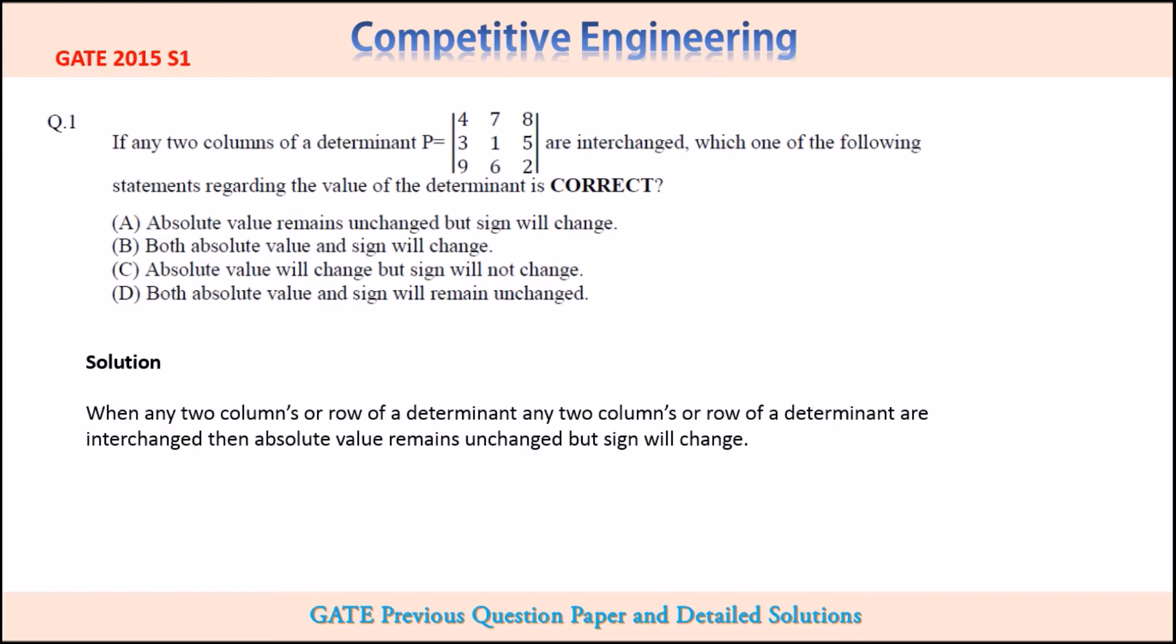The properties of determinant: one of the properties is when any two columns or row of a determinant are interchanged, then absolute value of the determinant remains unchanged but sign will change. Which means that if you are interchanging two rows or two columns, then the value of determinant will remain the same, meaning absolute value, but the sign will change.